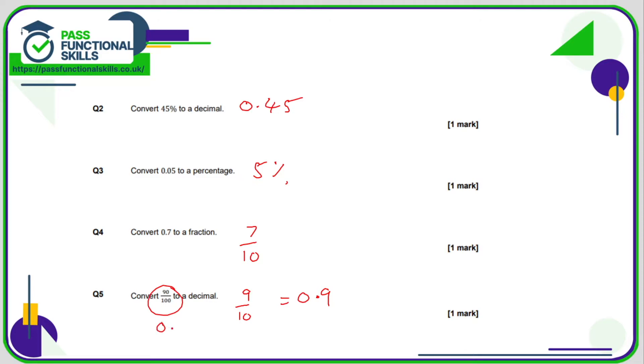If it's hundredths, we're talking about a decimal with two decimal places, so we could write 90 one-hundredths as 0.90, but this zero on the end is not doing anything useful, so that's why we take it off. We could have a number of zeros on the end, they're not changing the value of this number.